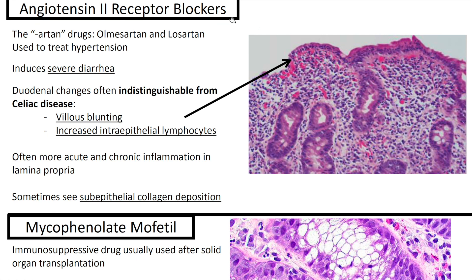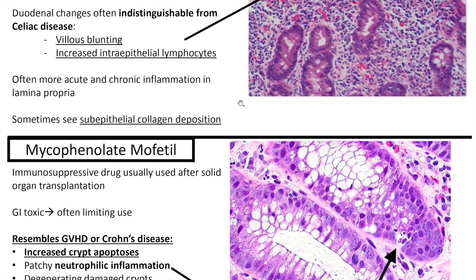Next up we have angiotensin II receptor blockers — the sartan drugs, such as olmesartan and losartan — used to treat hypertension. They induce severe diarrhea. The duodenal changes are often indistinguishable from celiac disease, with villus blunting and increased intraepithelial lymphocytes. However, you're going to have more acute and chronic inflammation in the lamina propria and sometimes even sub-epithelial collagen deposition. These medication effects can be tough because they can mimic celiac disease or other GI entities, so it's a good topic to review.